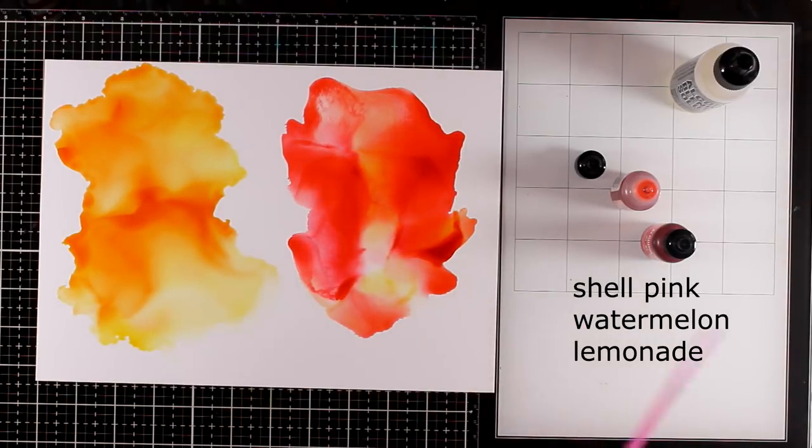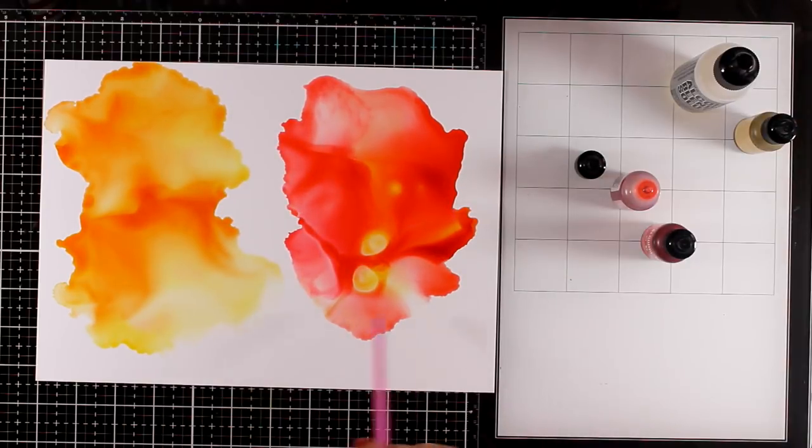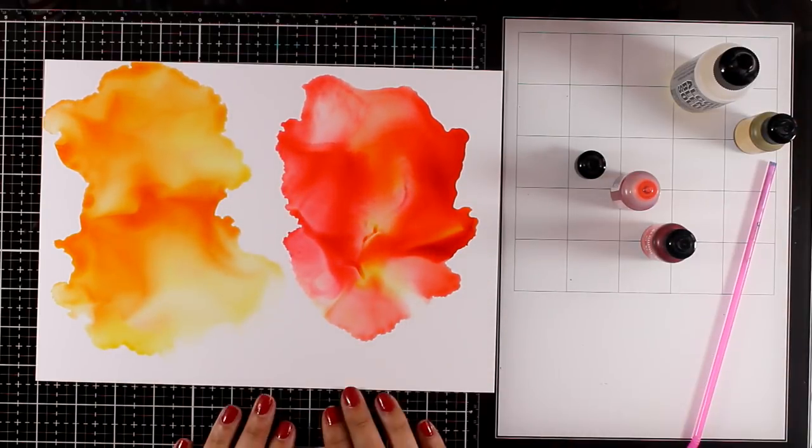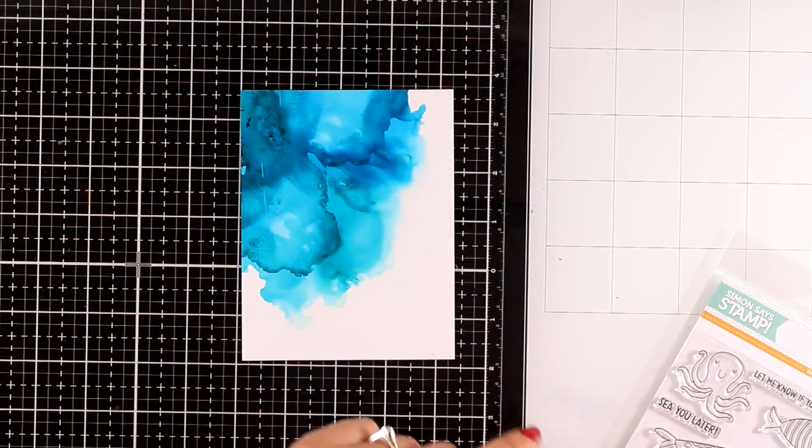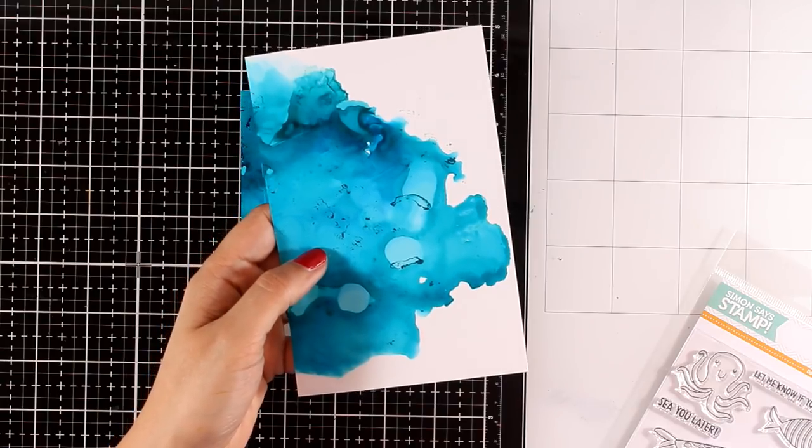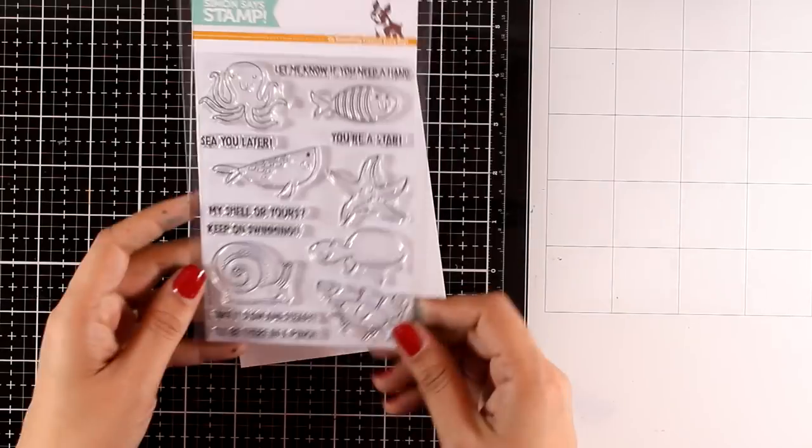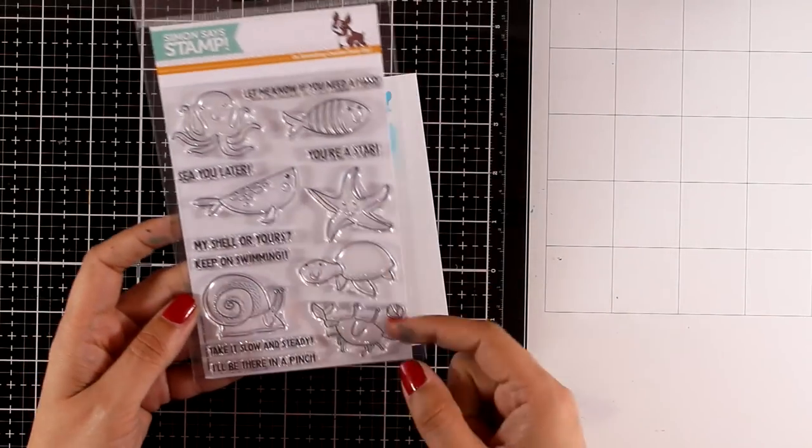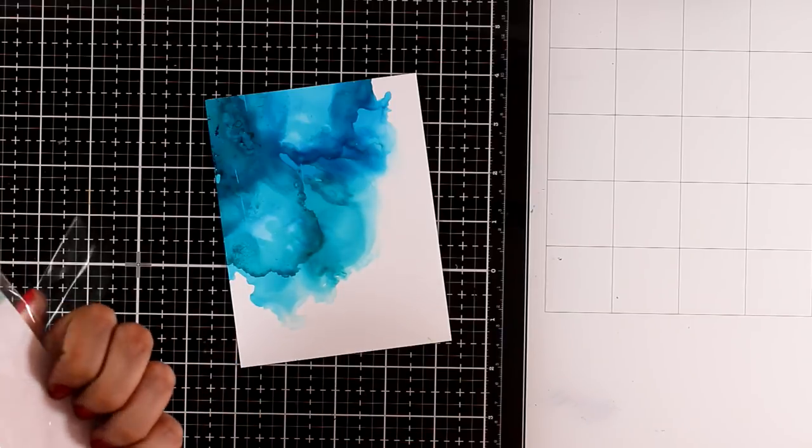Now remember that there are many more ways to use alcohol inks but this is my most favorite and I find that I always like the results. And now let's go back to the first background that I have created with the blue shades. I'm going to create three cards and I'm going to pair those backgrounds with a lovely stamp set that has just been released by Simon Says Stamp. This is called Under the Sea Animals.